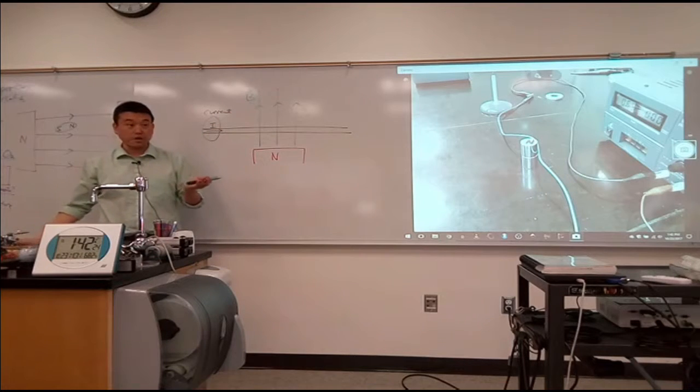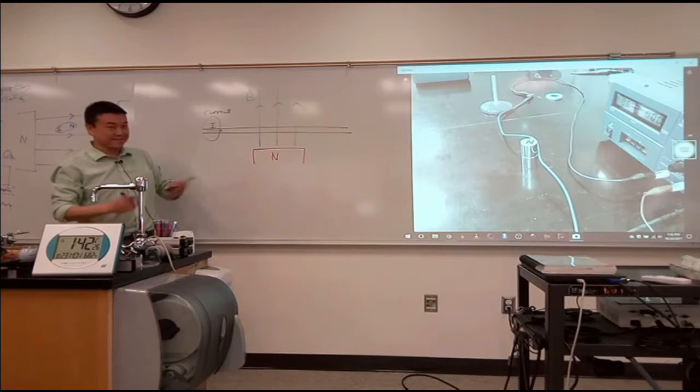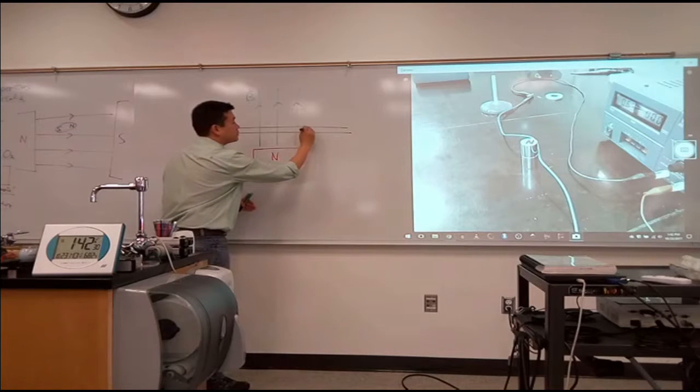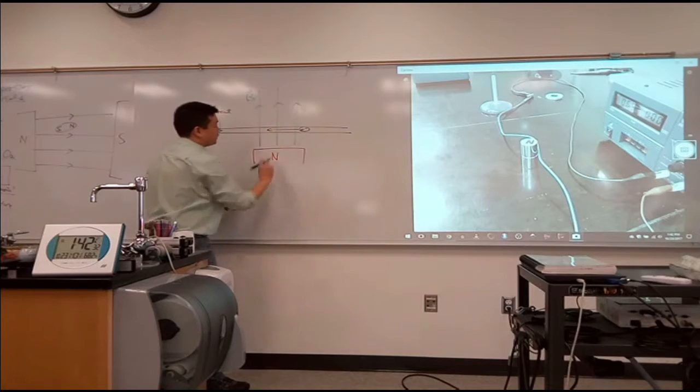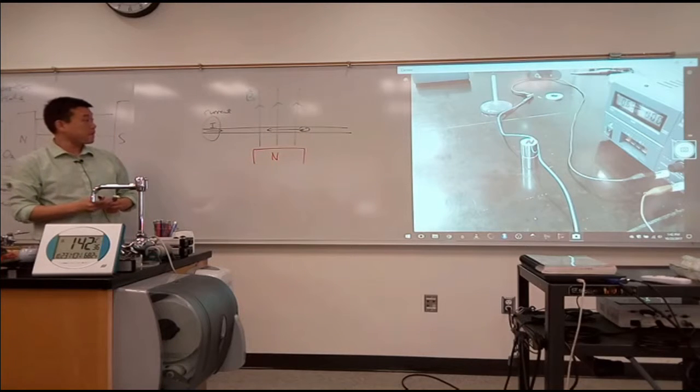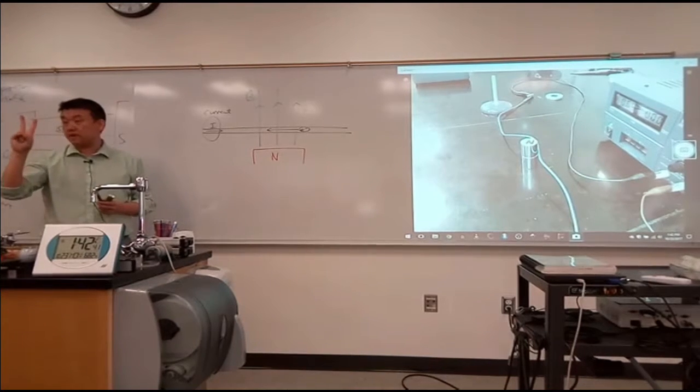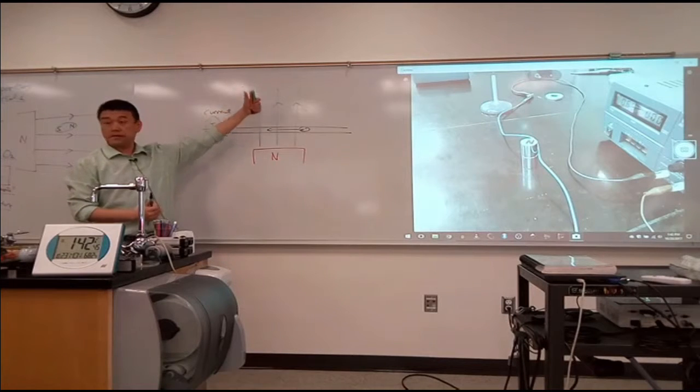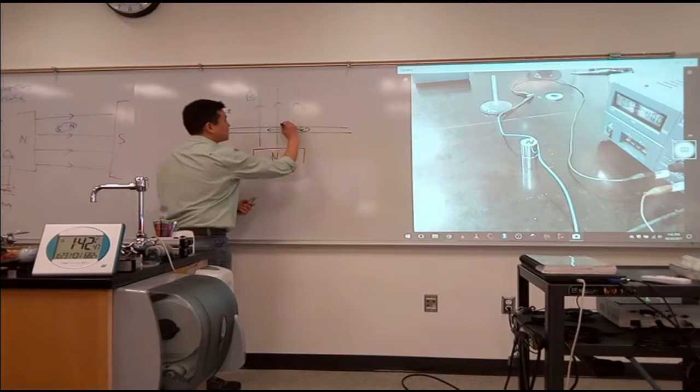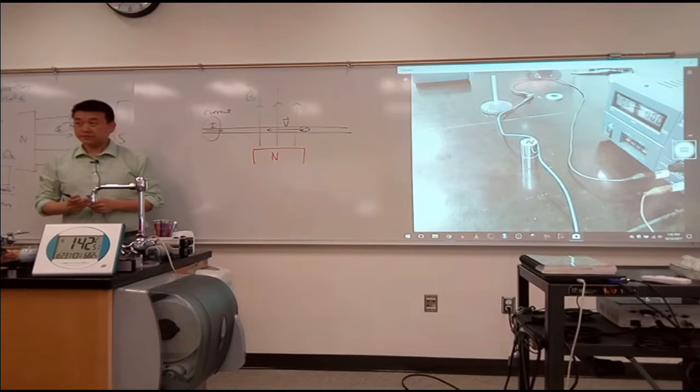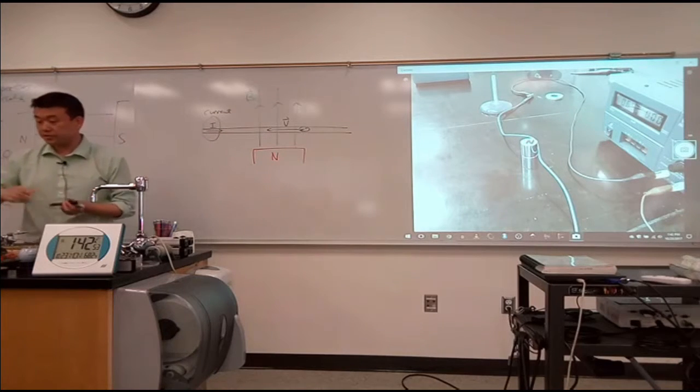Because electron is negatively charged, that's just the convention we have to deal with. So what this means is I have electrons that are moving from right to left, according to the description we have. So I have two kinds of things that are describing some sort of direction, magnetic field pointing up, and I guess electron velocity pointing to the left. What direction is my force based on what you see here?